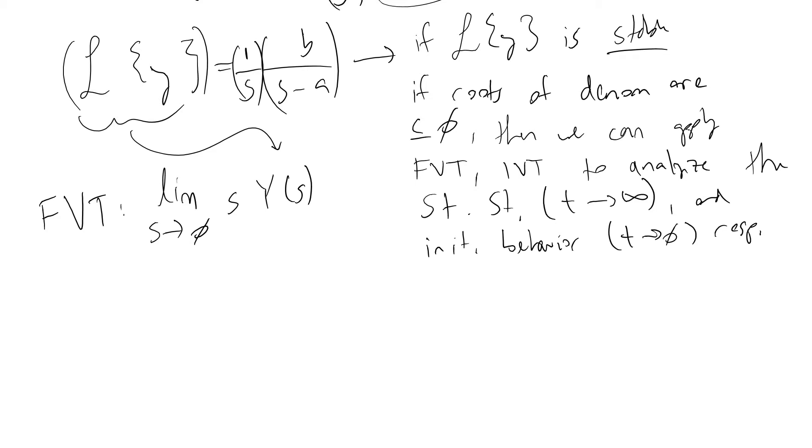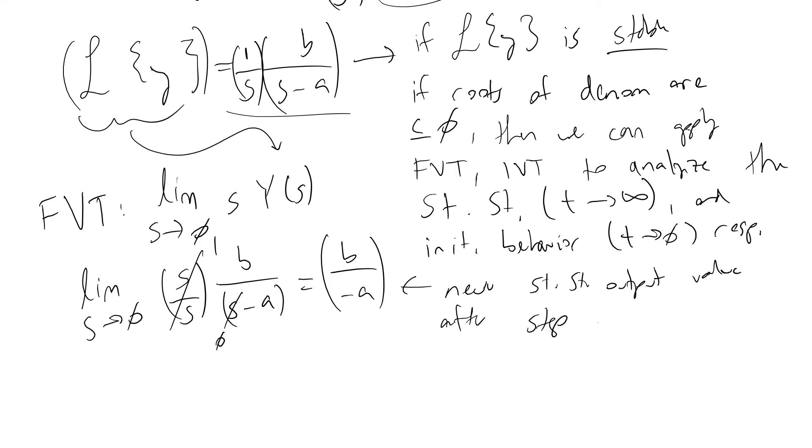And so if we wanted to evaluate what that is in this model that we have here, what we would have is we would have the limit as s approaches 0 of s over s, so this cancels to 1, over s minus a, and s goes to 0. This tells us that our output will reach some value of the coefficients b over minus a at steady state. So this will be the new steady state output value after the step perturbation.